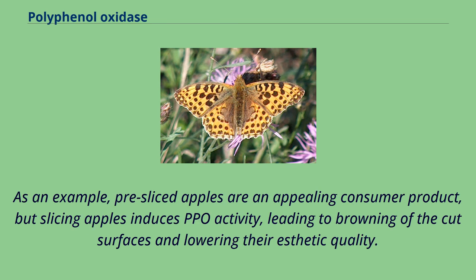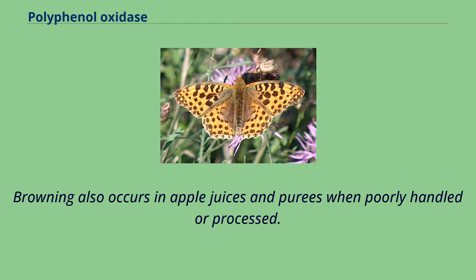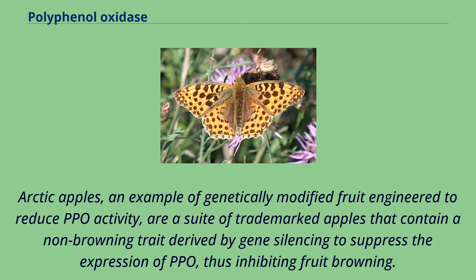Pre-sliced apples are an appealing consumer product, but slicing apples induces PPO activity, leading to browning of the cut surfaces and lowering their aesthetic quality. Browning also occurs in apple juices and purees when poorly handled or processed. Arctic apples, an example of genetically modified fruit engineered to reduce PPO activity, are a suite of trademarked apples that contain a non-browning trait derived by gene silencing to suppress the expression of PPO, thus inhibiting fruit browning.